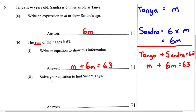Now for the second part, it says solve your equation to find Sandra's age. We're adding using algebra. When adding using algebra, the first thing we do is look to see whether we're adding like terms. When we look at these two terms, they have the same variable, which is M, and they have the same exponent, which is 1. Because they have the same variable and exponent, we can say these are like terms. Even though there isn't any coefficient in front of Tanya's age M, we know it's always going to have a coefficient of 1. Therefore, we can rewrite this as 1M plus 6M equals 63.